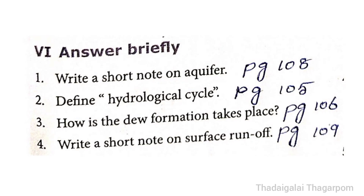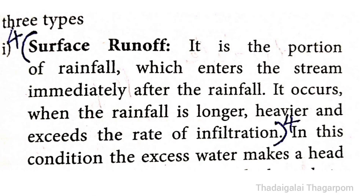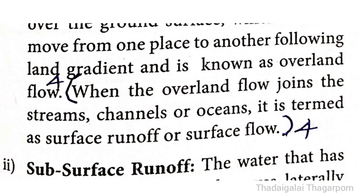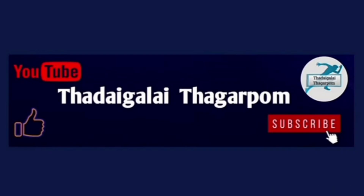4th question: Write a short note on Surface Runoff. The answer is given in page number 109, under 'Types of Runoff', first 5 lines on Surface Runoff. It is the portion of rainfall which enters the stream immediately after the rainfall. It occurs when the rainfall is longer and heavier and exceeds the rate of infiltration. When the overland flow joins the streams, channels or oceans, it is termed as surface runoff or surface flow.